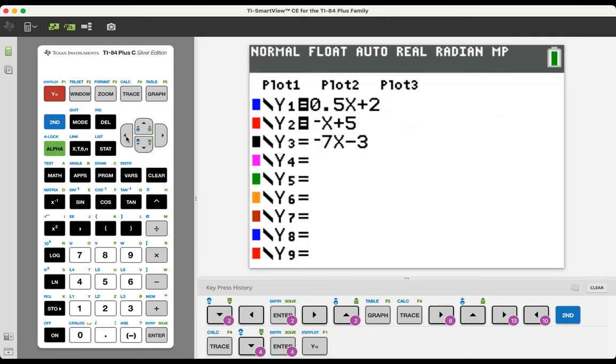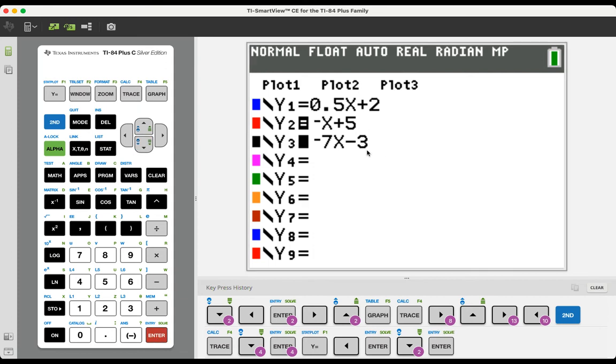For that demonstration, I'm going to turn off the first equation by arrowing over to the equal sign and pressing enter, and then I'm going to scroll down, and I'm going to turn on the third one, and now I want to graph the red and the black, negative x plus 5 and negative 7x minus 3.